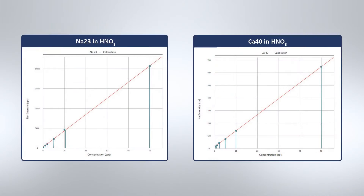Don't believe me? Well, here are some calibration curves measured on a Nexion ICP-MS using the PrepFast-S. How does this system make all of this possible?